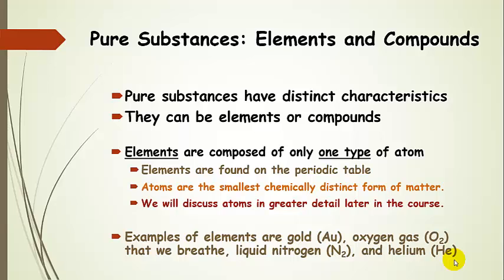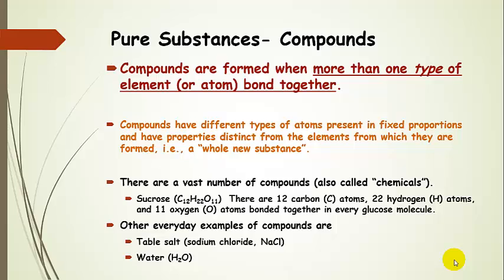Elements are all found on the periodic table. Some examples of elements: Gold — that's Au on the periodic table. Oxygen gas — notice that's not just one atom of oxygen; O2 means two atoms of oxygen bonded together for oxygen gas. Liquid nitrogen, which also comes as a diatomic molecule in the elemental form. And helium, which is He. We can take a compound, and that can be a pure substance as well — this is when we have more than one type of element or atom bonded together.